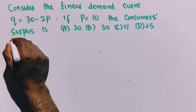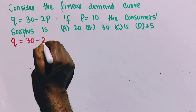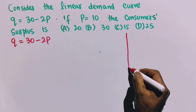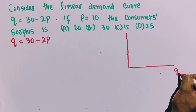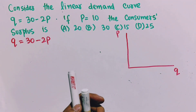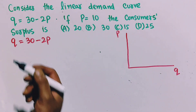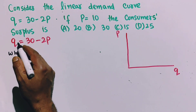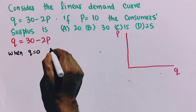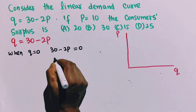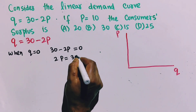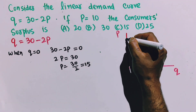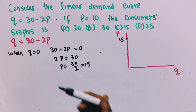We are given the demand function Q = 30 - 2P. Let us draw the graph of this demand function with output on the horizontal axis and price on the vertical axis. When Q is equal to 0, we get 30 - 2P = 0, which gives 2P = 30, or P = 15. So 15 is the price intercept.